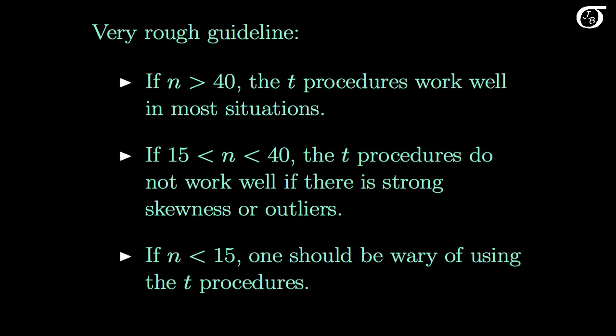If the sample size is smaller still — less than 15 — one should be wary of using the t-procedures. It may still be reasonable to use them if we are very confident that the population is approximately normally distributed, but if that assumption does not hold, the t-procedures can perform very poorly for sample sizes this small.